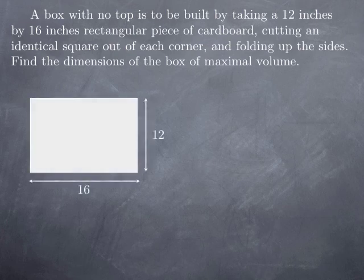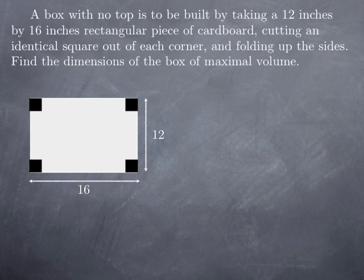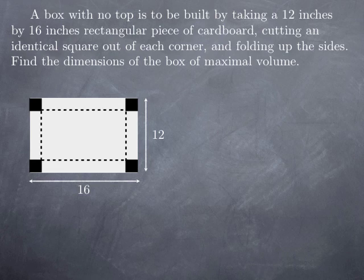So here is a piece of cardboard that is 16 by 12, and we cut out of each corner an identical square. So something like that. What does that mean? That we fold up the sides. If you look at these dotted lines, if I fold along these dotted lines, then I have these four flaps that move up and become the sides of a box.